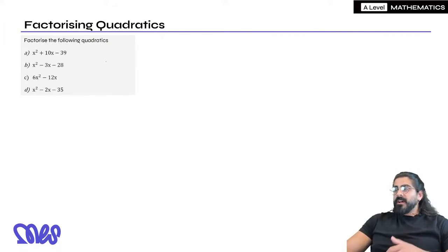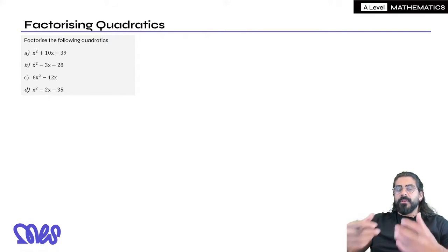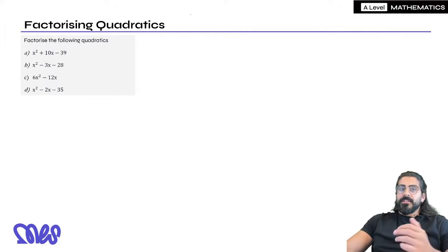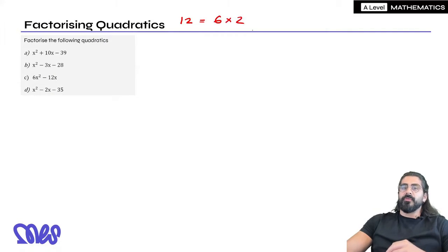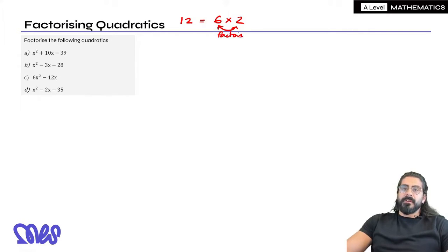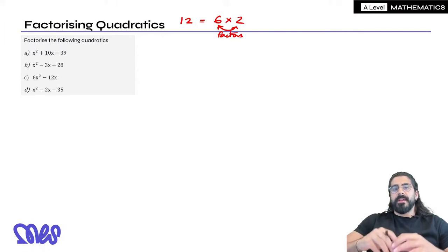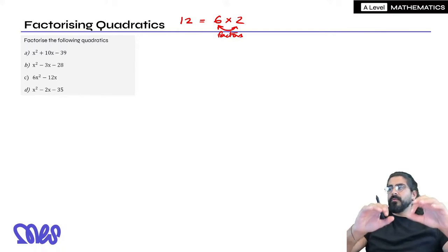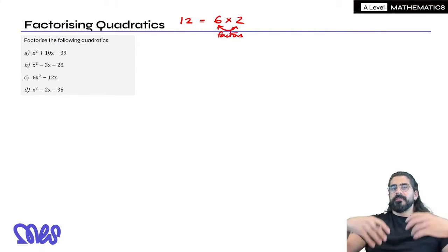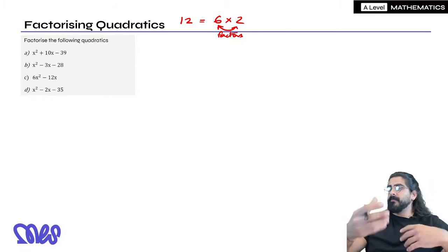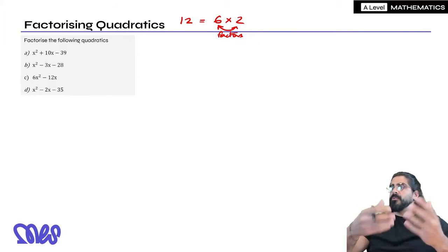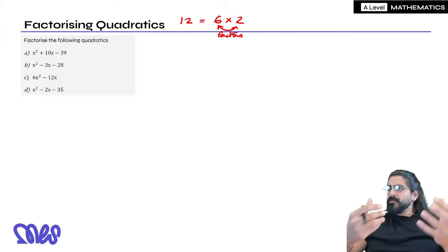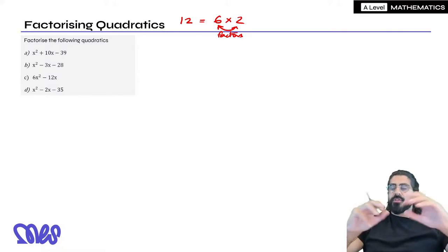So when we say factorize, we're introducing brackets. Now what factorize actually means — we know 12, for example, is 6 times 2. We say 6 and 2 are the factors of a number. So when we say factorize, we're basically saying rewrite that expression into the multiplication of two things. So if you factorize 12, you would say something like 6 times 2 or 4 times 3. Algebraically, we're rewriting it as the multiplication of two things.